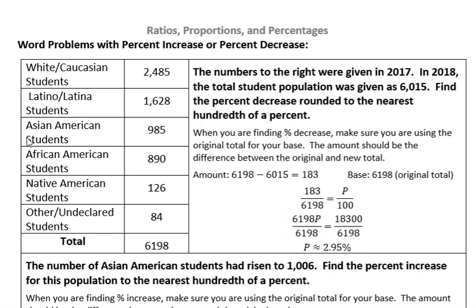This is the same chart I used in a previous video, which shows the number of students enrolled at a community college who identified their ethnicity. You can see that the total was 6,198. The numbers to the right were given in 2017. In 2018, the total student population was given as 6,015 — that means it had gone down. The question is: find the percent decrease, rounded to the nearest hundredth of a percent.